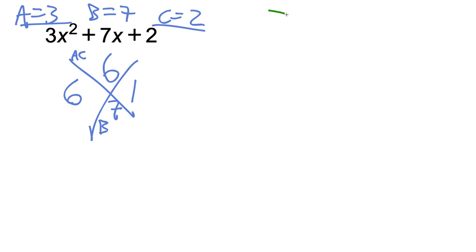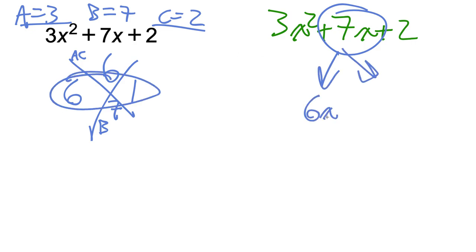So again, and I'll just rewrite the whole thing here, the 3x squared plus 7x plus 2. This is going to be split as middle term into the two terms we now have, the 6 and the 1. So 6x plus 1x. And then the 3x squared is going to drop down as well as the 2. That'll drop down as well.